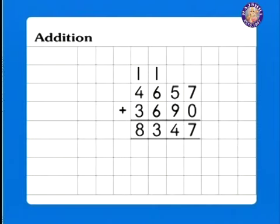4,657 plus 3,690 gives us 8,347. Surely, you feel like an expert already, don't you? Well then, let's take on the last section where we'll add 3 4-digit numbers. Yes, you heard it right.